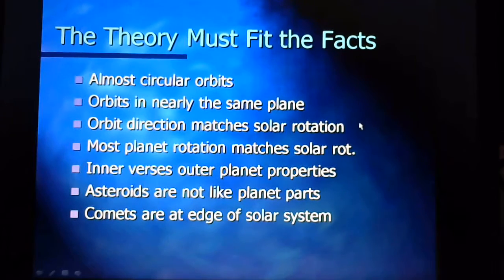The orbit direction matches the direction in which the sun rotates on its axis. So as the sun spins around, we all follow that direction around in our orbits as we're going around the sun. And most of the planets rotate on their axes the same way that the sun is rotating on its axis.